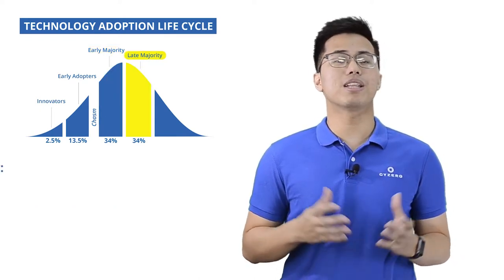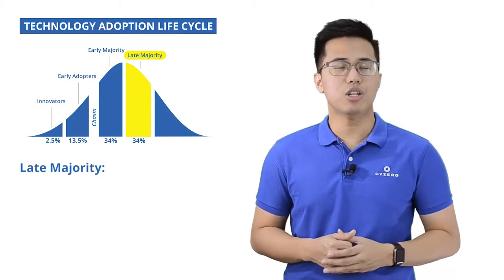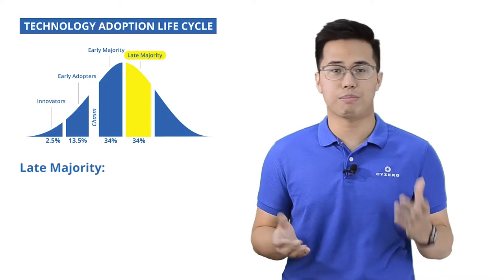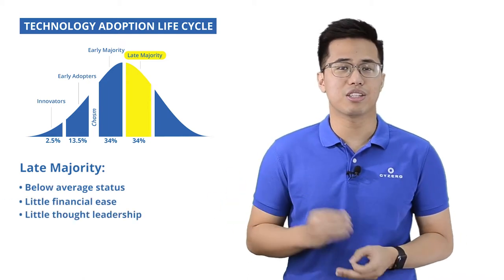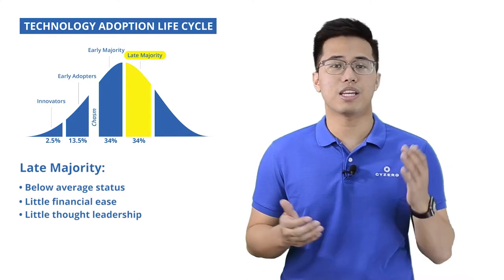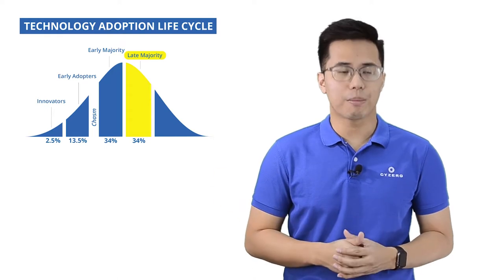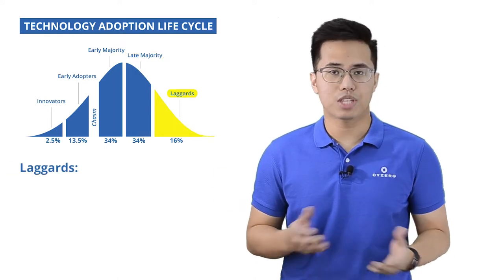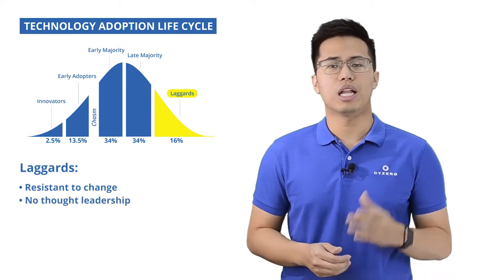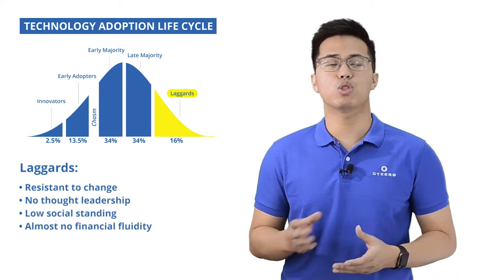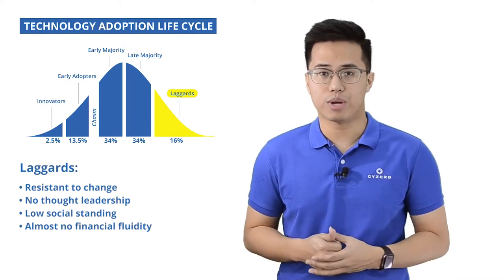The fourth group is the late majority, which makes up 34% of the remaining population. They are late to adopt an innovation because of factors like below average status, little financial ease, and very little thought leadership. When this group adopts an innovation, the technology is about to reach the maturity phase. Which brings us to the last group to adopt, the laggards. They are the last group to adopt and are characterized by being resistant to change. They have no thought leadership, low social standing, and almost no financial fluidity. When they adopt an innovation, the technology is on the discontinuity phase already.